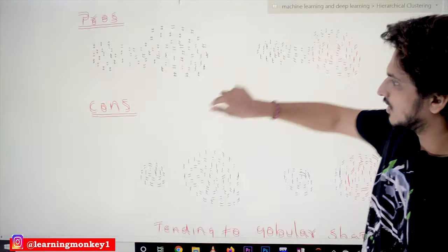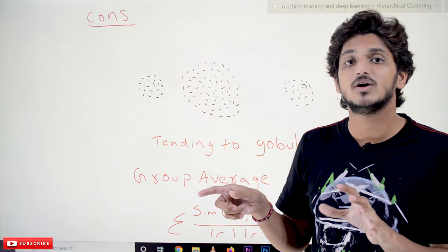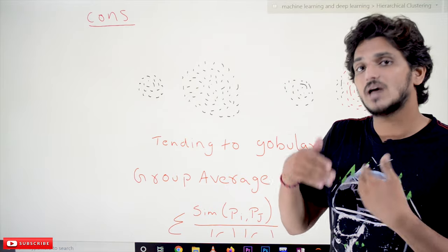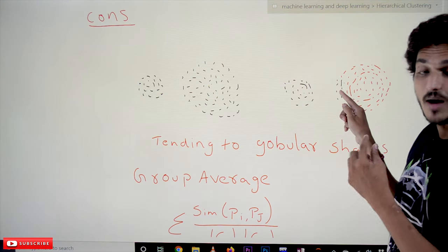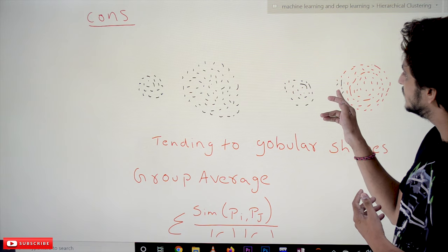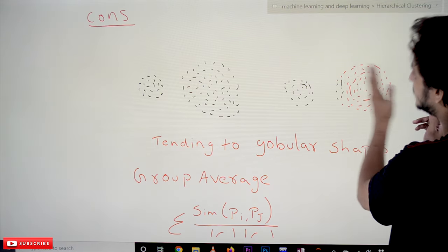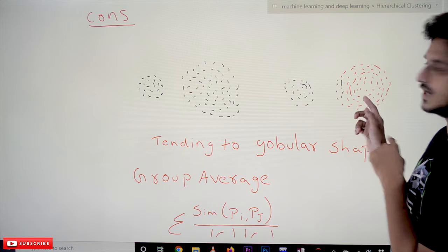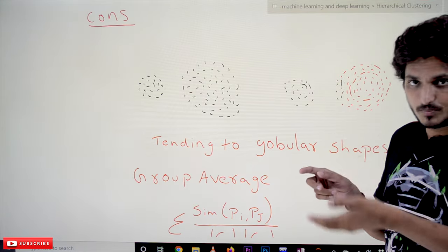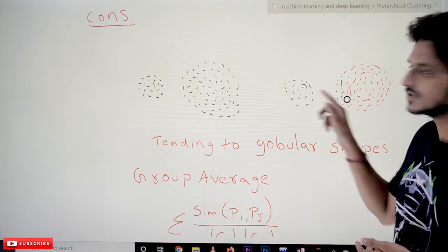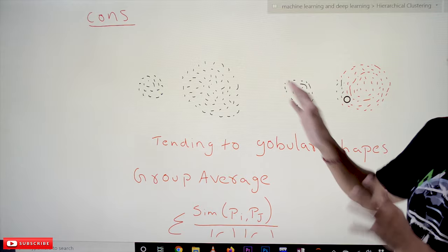Now the negatives of maximum distance: if you take a non-spherical cluster shape, maximum distance does not work properly because complete linkage tends toward globular, meaning spherical, shapes. For example, take a point and calculate its distance to a cluster — the maximum will be updated. Similarly calculate from another point — the one with the higher maximum value is compared, and then the minimum is picked. So this point goes to this cluster and these points go to that cluster. It is always tending towards globular shapes. That is the key negative of maximum/complete linkage.